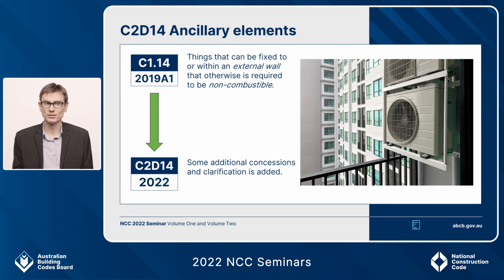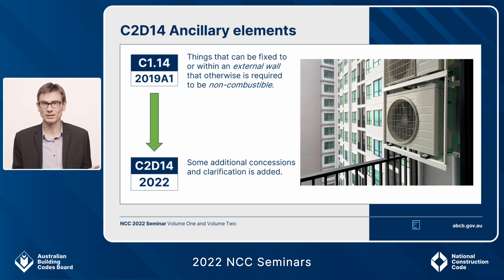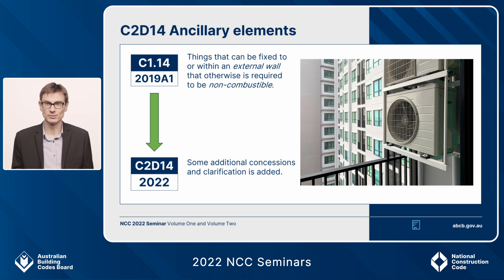The next change is C2D14 ancillary elements. This provision has received some changes for NCC 2022 — it's currently known as C114 in NCC 2019. C114 sets out things that can be attached to or found within an external wall, and is the reason why downpipes on type A and type B buildings can be combustible. There are some minor changes for 2022, including additional concessions and clarifications.